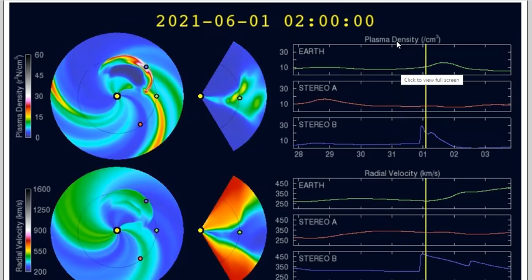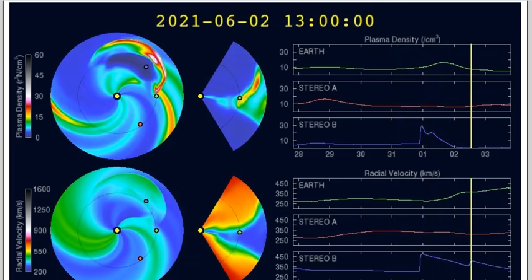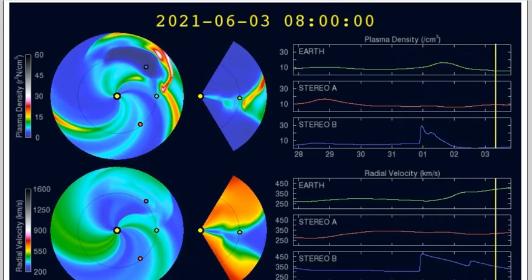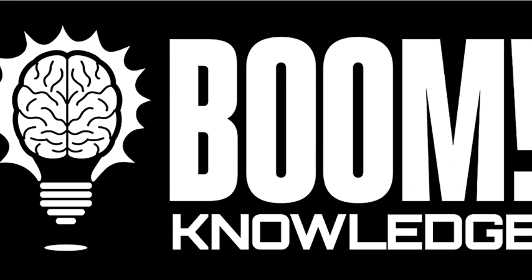And just a heads up on a long duration CME coming off the side of our plasma sphere. Proper prior planning prevents piss-poor performance when the Sun is awakening and the grid is at risk. Subscribe to the channel if you haven't. Share this with like-minded people and be safe. We love you. That's Boom Knowledge. It's good to be back.